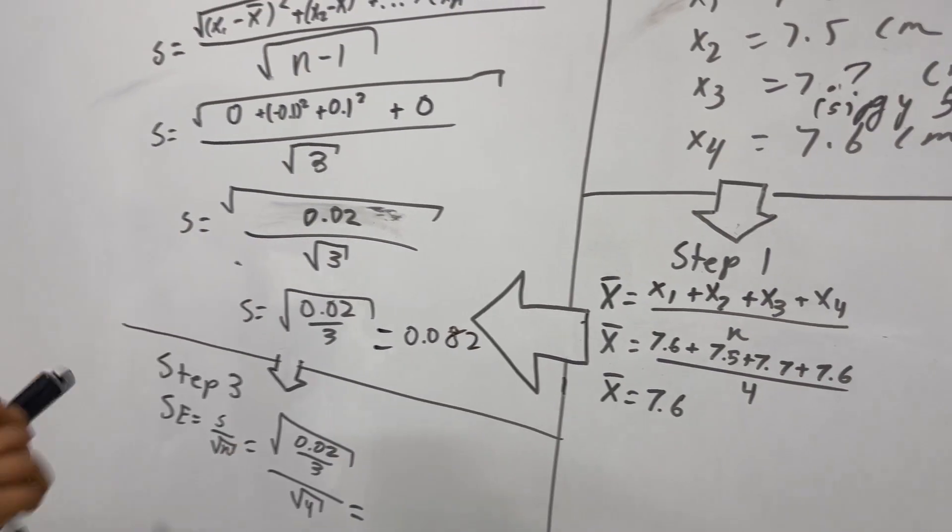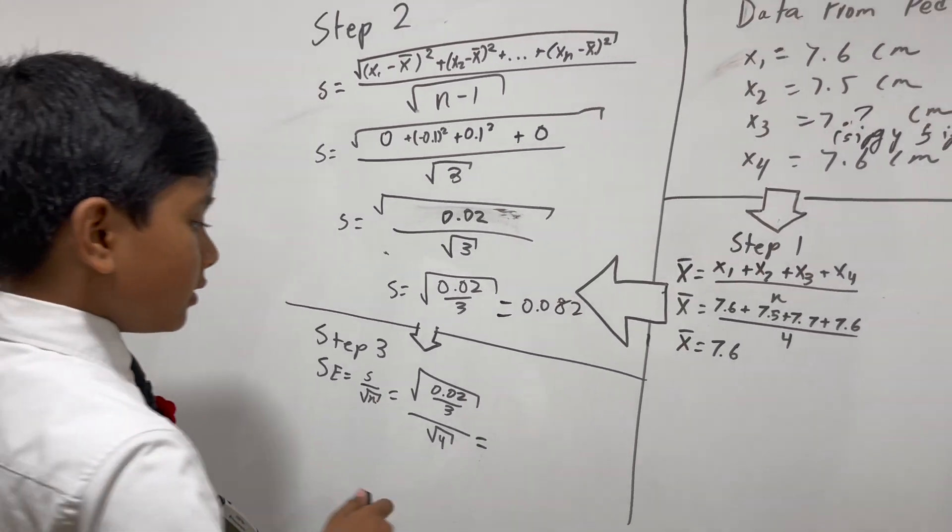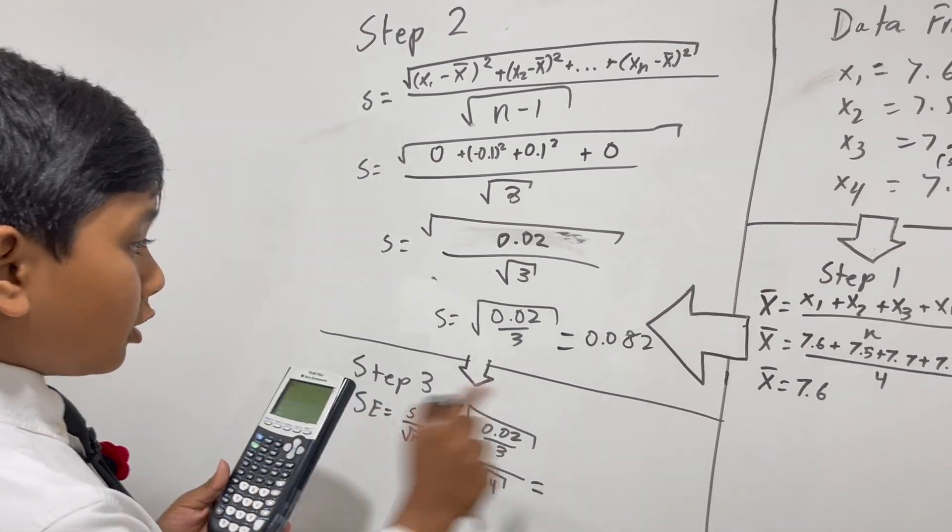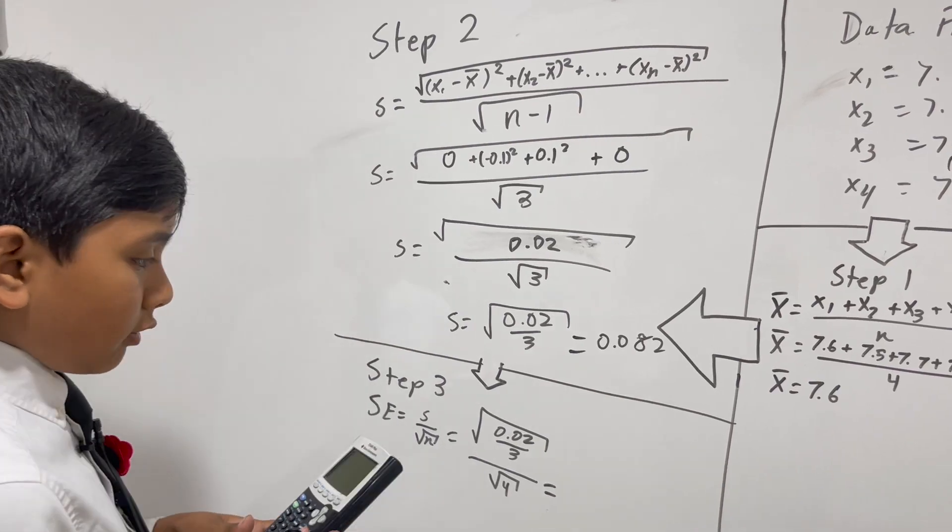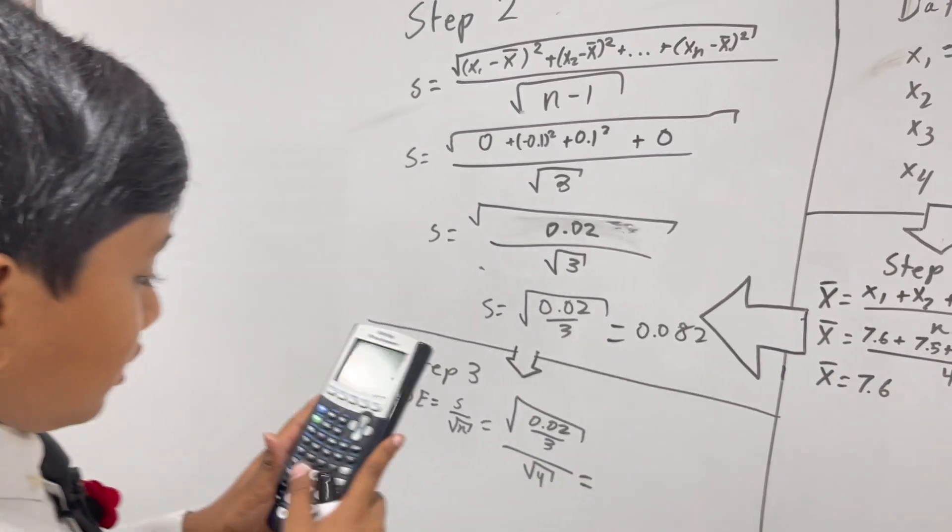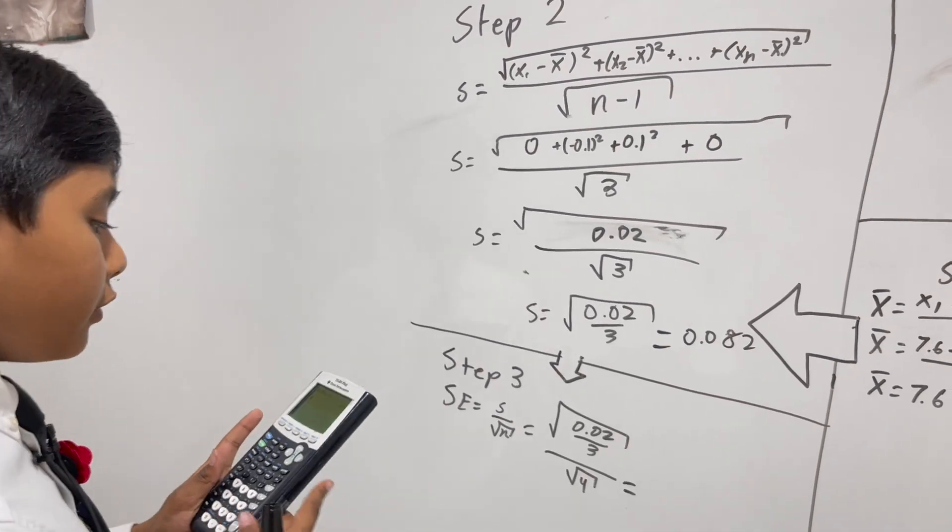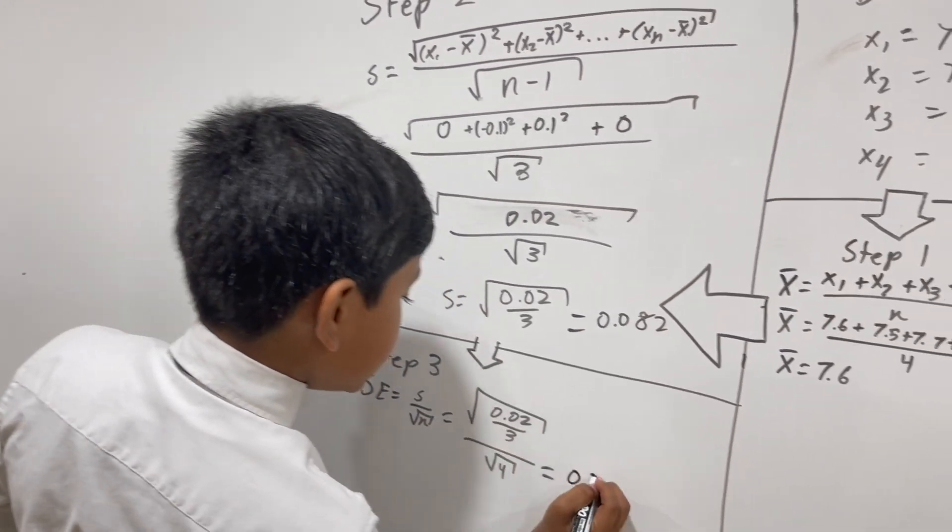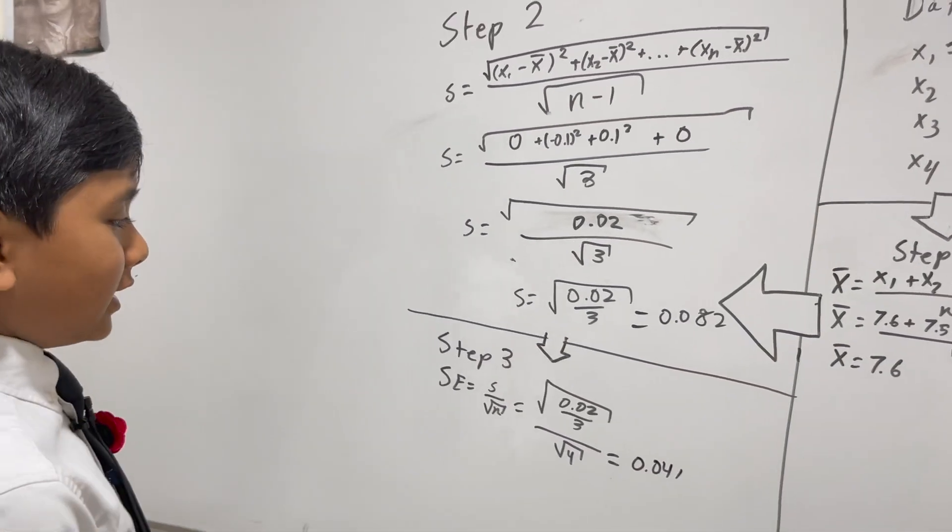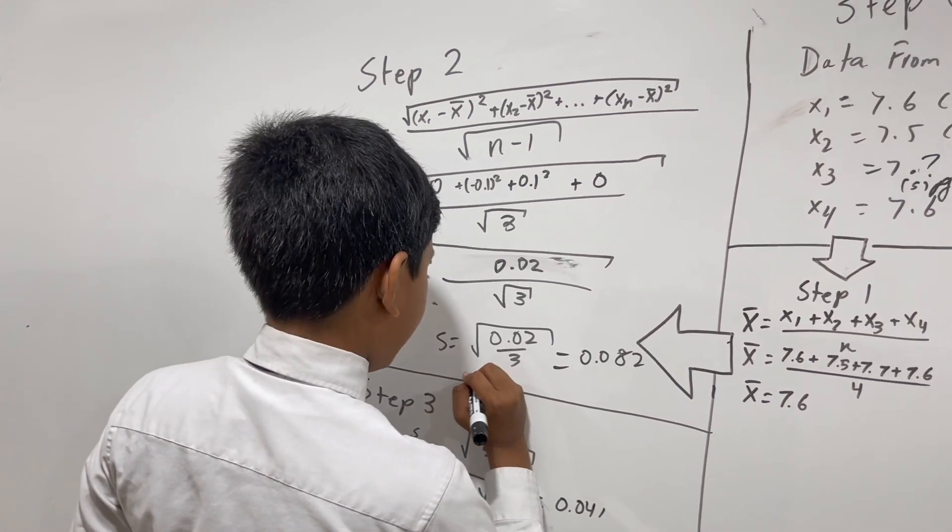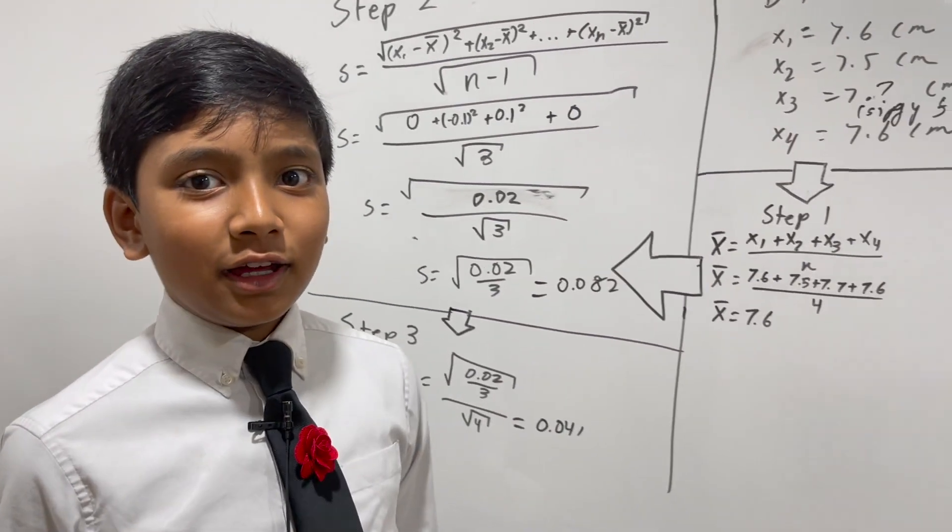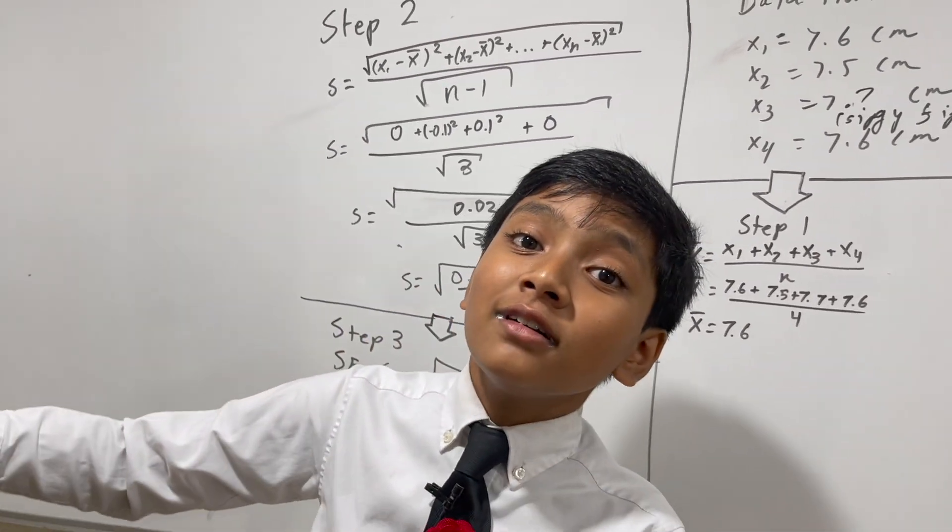And this is going to be 0.082 over the square root of 4 is 2, so what is 0.082 over 2? Well, that's simply 0.041. Done! So all right, now what's the next step?